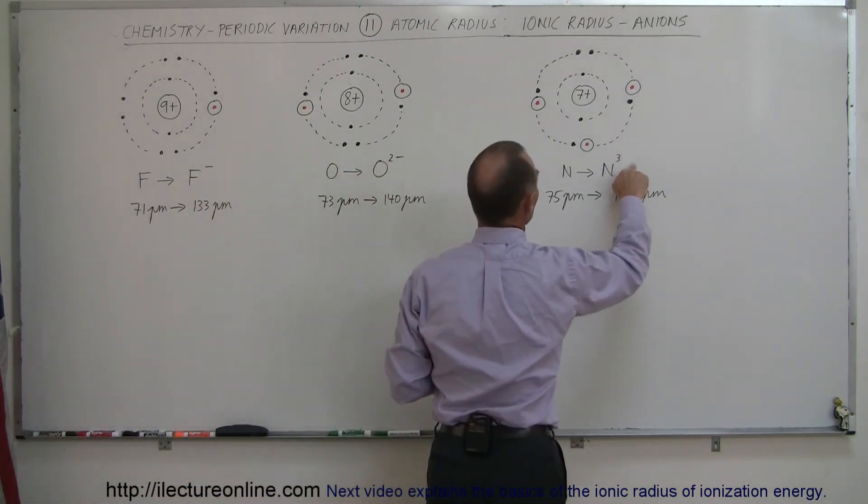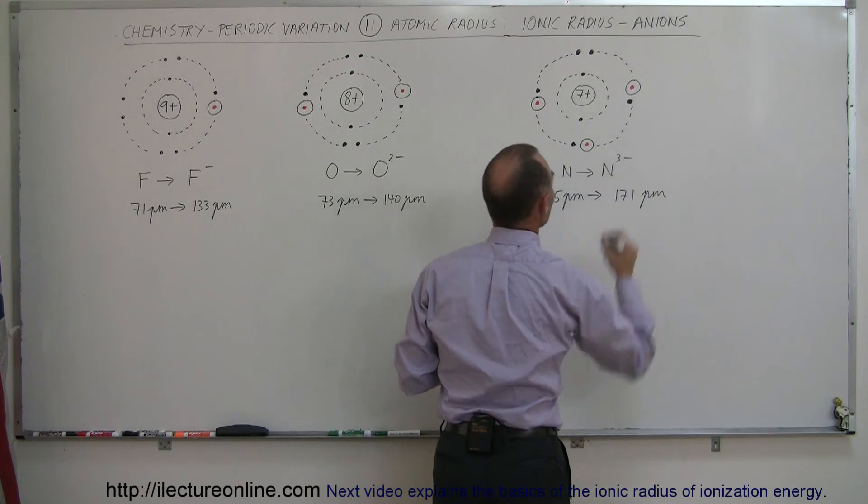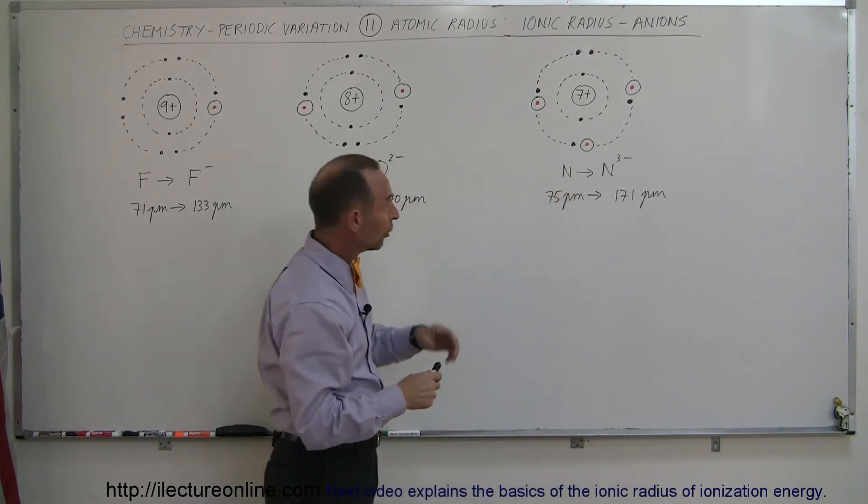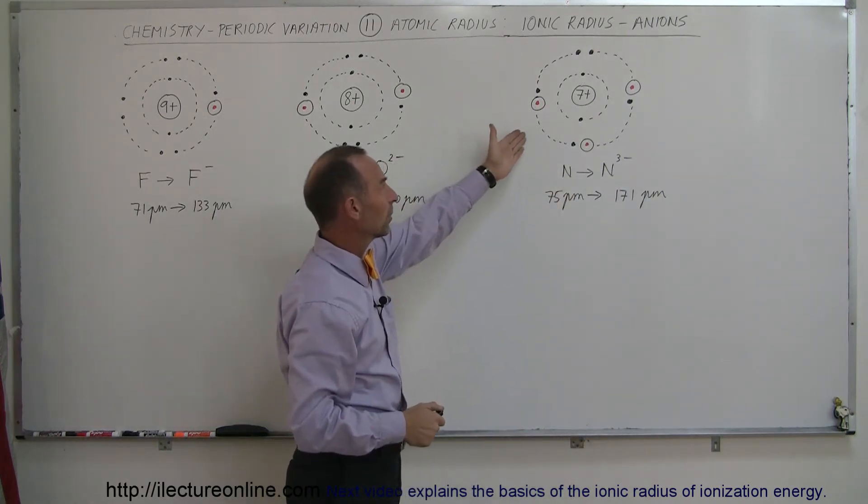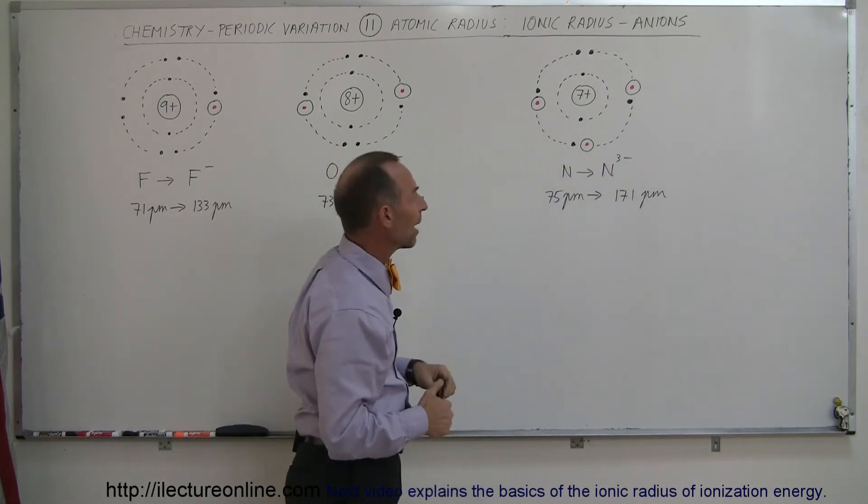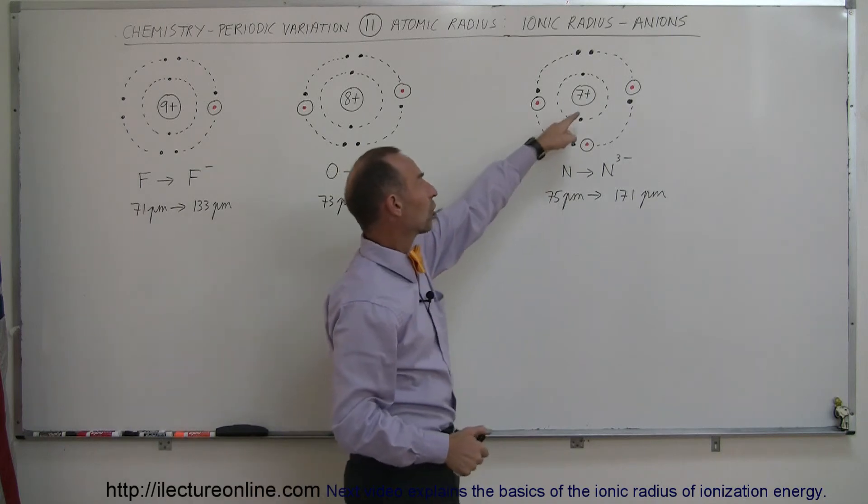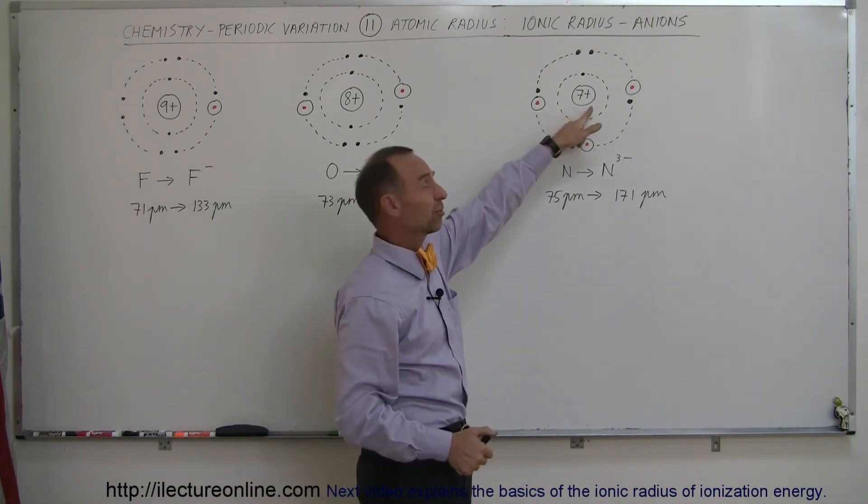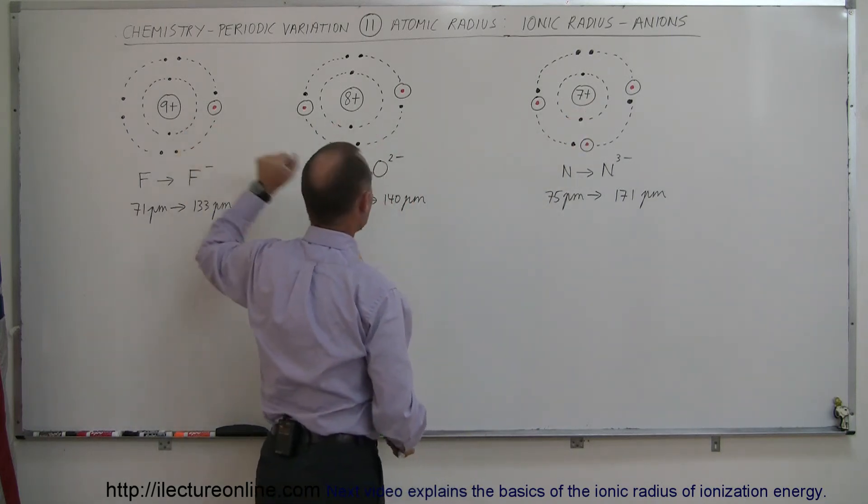Now taking a look at nitrogen - that's the wrong symbol here, this should be three negative right there. Notice the nitrogen can become a triply ionized anion, N3-, but notice the size increase. The charge in the nucleus is only 7 positive charges as opposed to 8 and 9 over here.